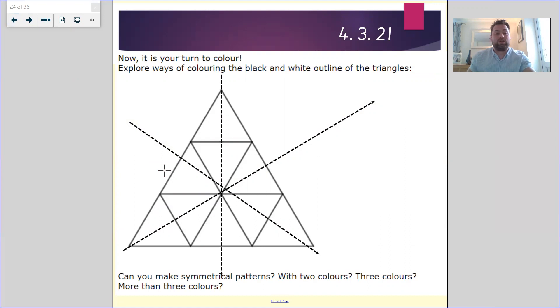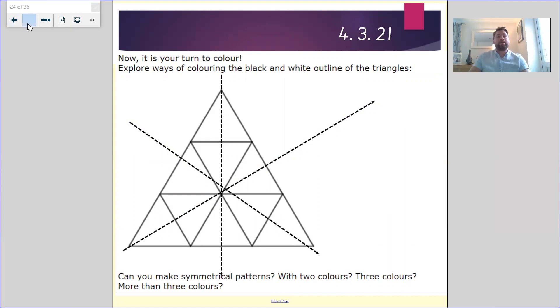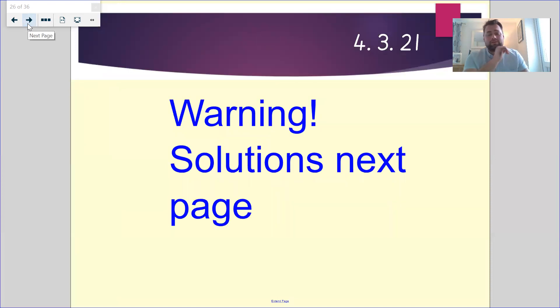So you're coloring in these triangles in different colors. Can you do it with two colors, three? Does it work with more than three colors? Can you make lines of symmetry? Off you go, do that task and then come back to this video once you've completed it. So you can see whether any of yours are correct or whether you've got some that I haven't got here.